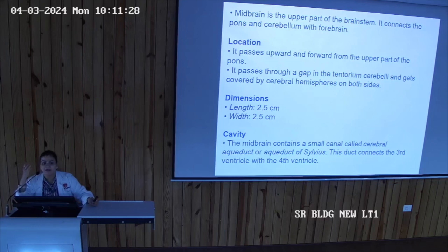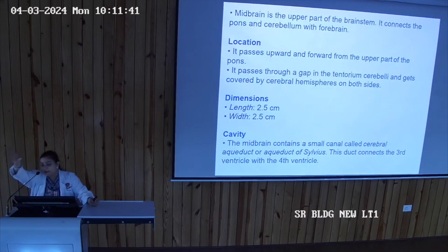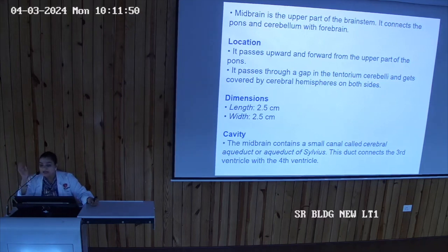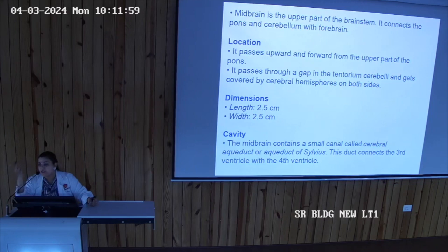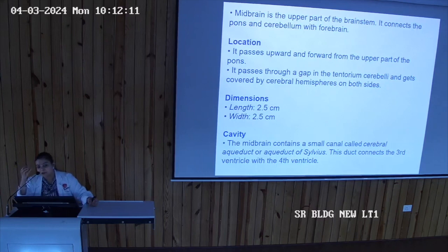Introduction: the midbrain is the smallest part of the brainstem. Midbrain is the upper part of the brainstem, then comes the pons which is a bridge-like structure and a connecting link, and then the medulla oblongata. The midbrain is also connected to the pons and cerebellum, connecting them with the forebrain. Midbrain is present between the forebrain and the hindbrain.